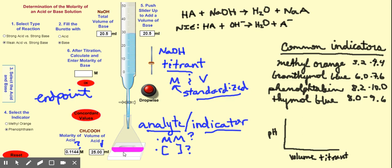What's causing the color change? I'm making the solution more basic by adding strong base to the weak acid. The reaction we have is: HA (an acid of any sort) reacts with NaOH. The acid donates a proton — the H⁺ — to the base, forming water. What's left is A⁻ and Na⁺, which form a compound we call a salt. Later we'll talk about the pH of salts and whether they're acidic, basic, or neutral.